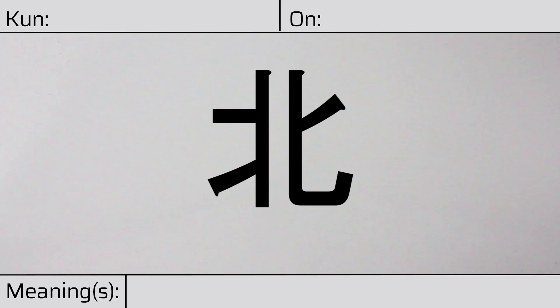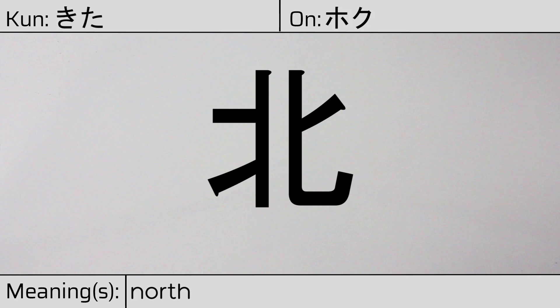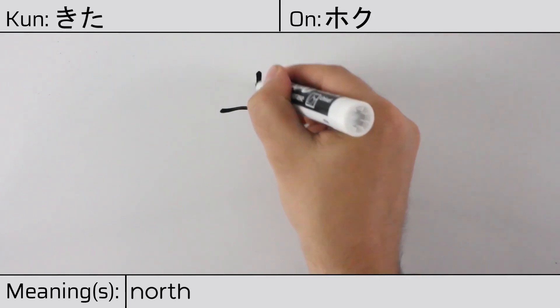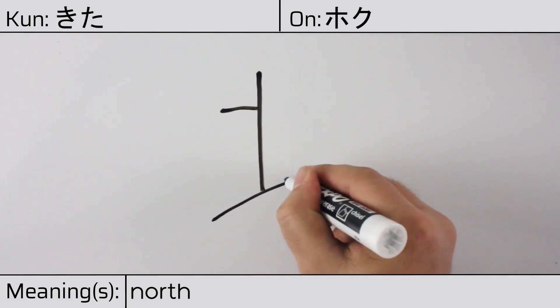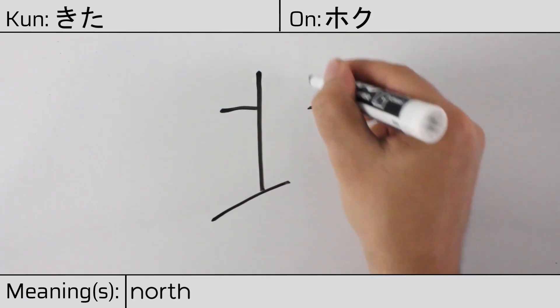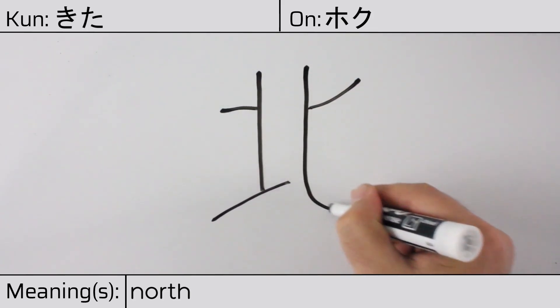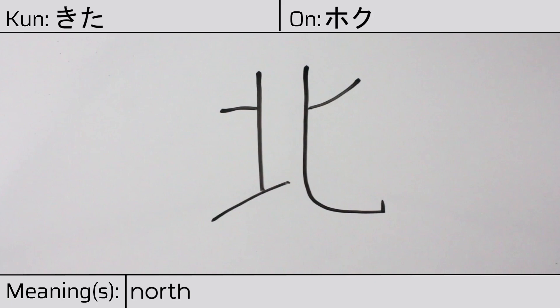Welcome to this lesson on Japanese kanji. Today, we'll be discussing this character. This kanji has a kunyomi or Japanese reading of kita, and it has an onyomi or Chinese reading of hoku. This character has the meaning north. Here is the stroke order.